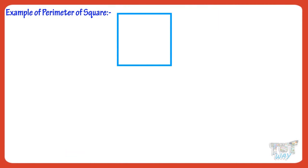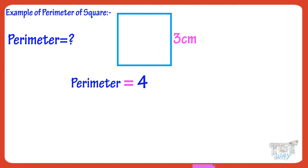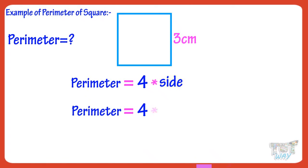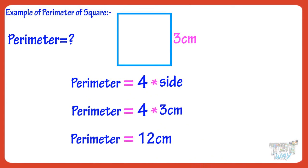Now, let's take another example. Here we have a square with side 3 cm. Let's find its parameter. We know parameter equals 4 multiplied with side, and here the side is 3 cm. So, parameter equals 4 multiplied with 3, which equals 12 cm.